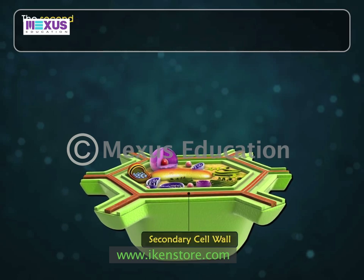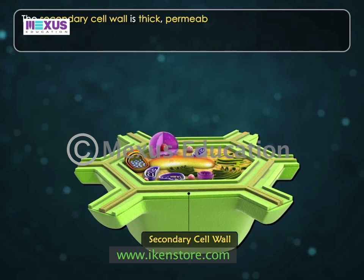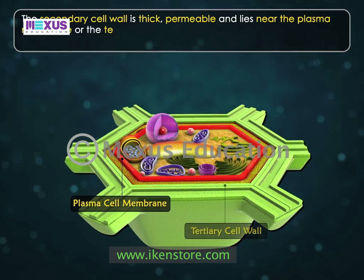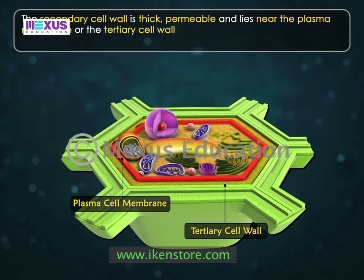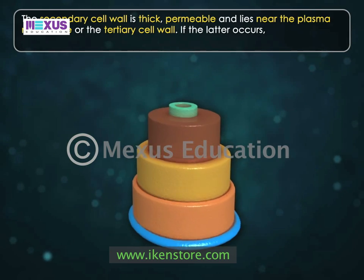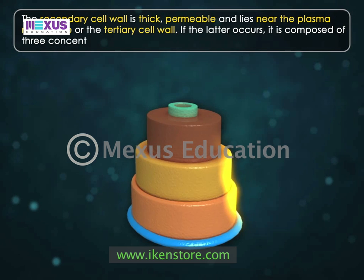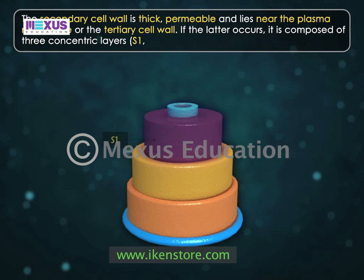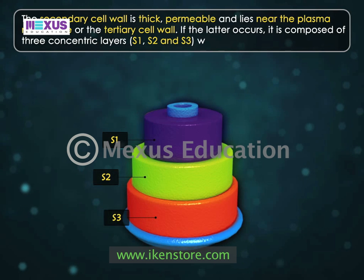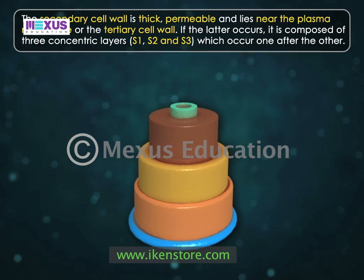The secondary cell wall is thick and permeable, lying near the plasma membrane or the tertiary cell wall. When the latter occurs, it is composed of three concentric layers — S1, S2, and S3 — which occur one after the other.